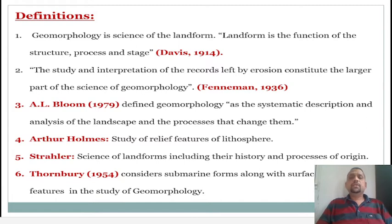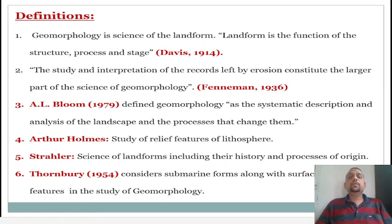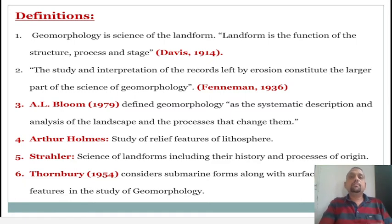The second definition is given by Feynman in 1936: the study and interpretation of the records left by erosion constitute the larger part of the science of geomorphology. Here the scientist says geomorphology is the study and interpretation of records left by erosion — the process by which an agent erodes material from one place and deposits it at another.